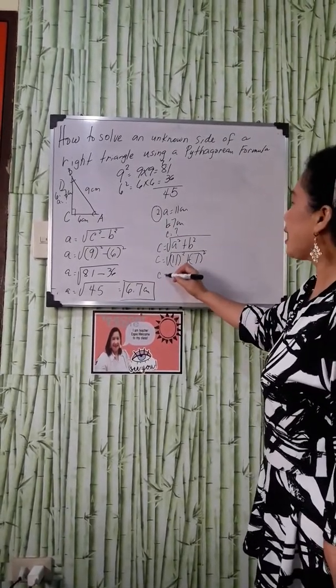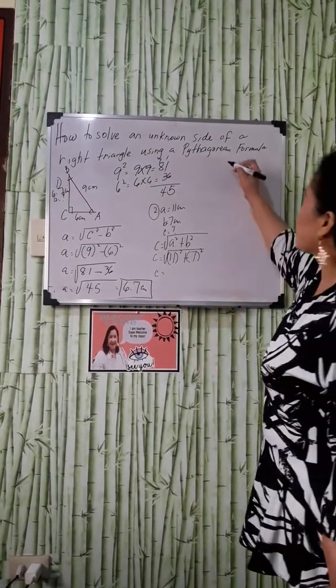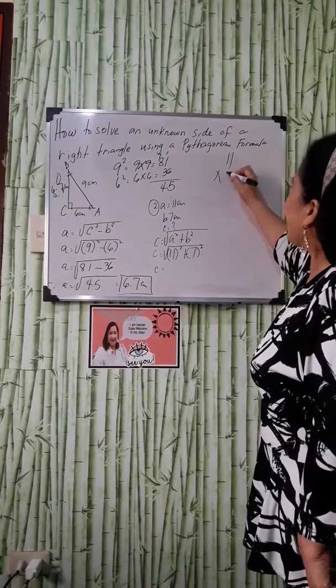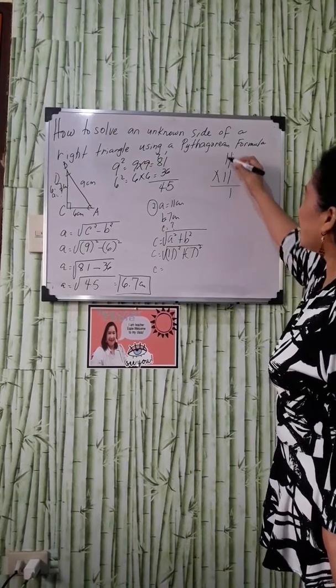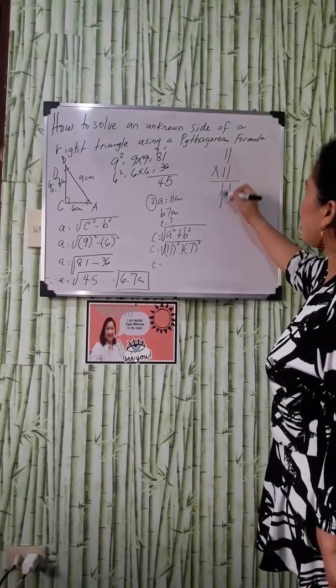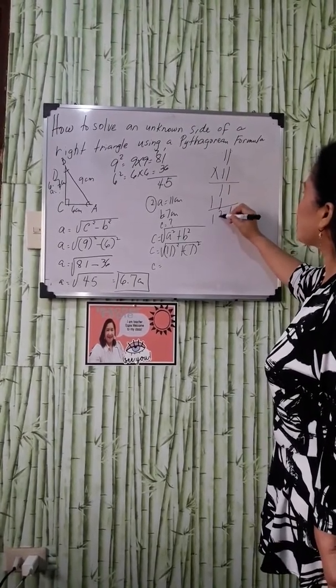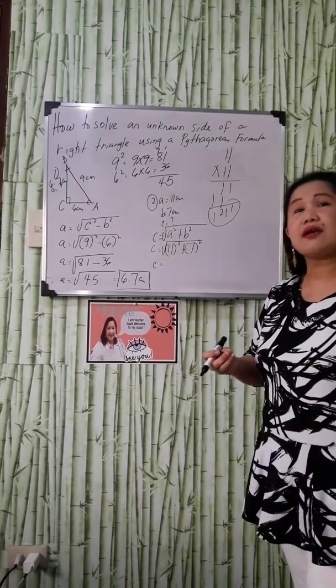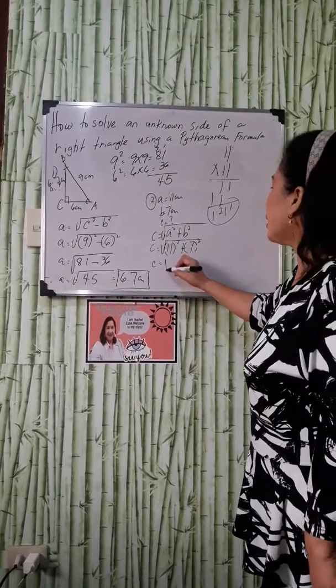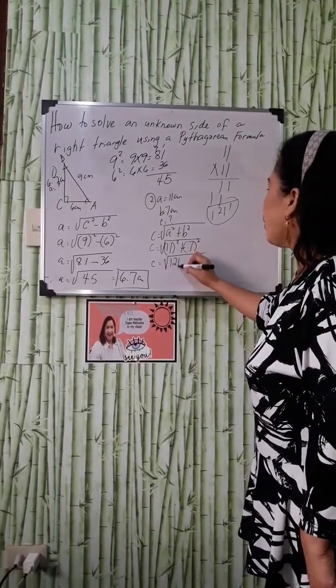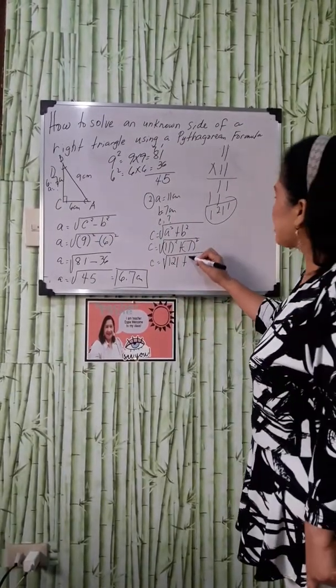We know that 11 squared means 11 times 11. If you are going to multiply 11 times 11, that will be 1 times 1 is 1, 1 times 1 is 1, 1 times 1 is 1. That will be 1, 1, 2, 1. But if you have your calculator there, it's very easy. You just press 11 times 11, so that will be 121 plus 7 squared means it's 49. That is equal to 49.